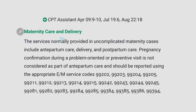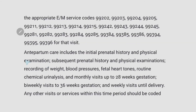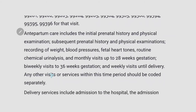The next important guideline is maternity care and delivery. The codes in the maternity care and delivery section are used to describe services related to antepartum, delivery, and postpartum care. Antepartum care includes initial prenatal history and physical examination, subsequent prenatal history and physical examination, recording of weight, blood pressure, fetal heart tones, routine chemical urinalysis, monthly visits up to 28 weeks gestation, bi-weekly visits to 36 weeks gestation, and weekly visits until delivery. Any other visits or services within this period should be coded separately.